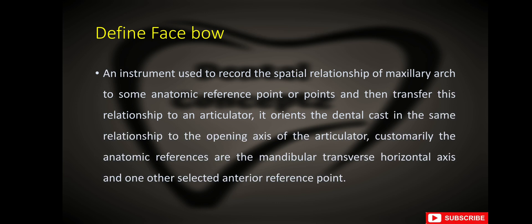What is face bow? Face bow is an instrument used to record the spatial relationship of the maxillary arch to some anatomic reference point or points and then transfer this relationship to an articulator. It orients the dental cast in the same relationship to the opening axis of the articulator. Customarily, the anatomic references are the mandibular transverse horizontal axis and one other selected anterior reference point.